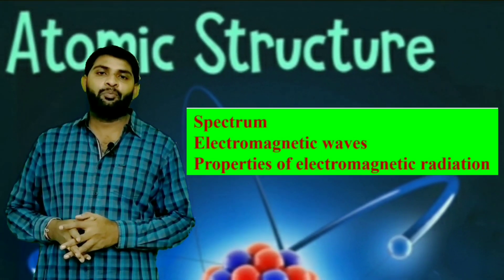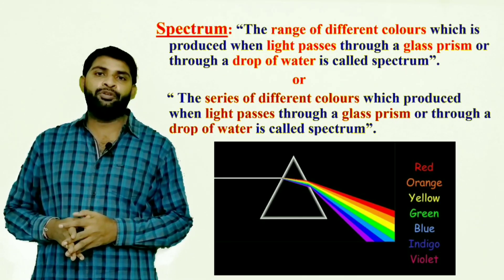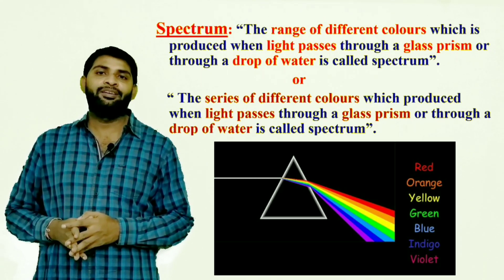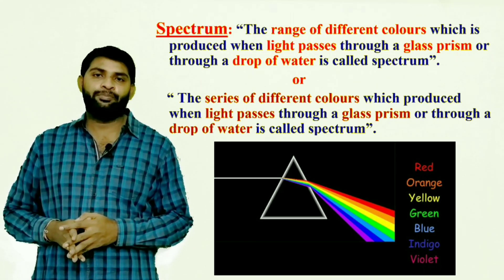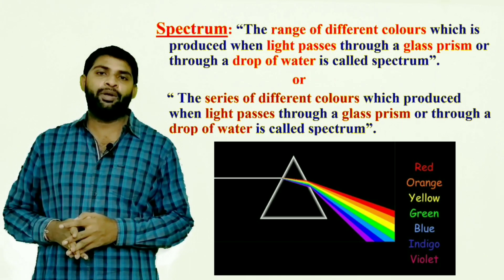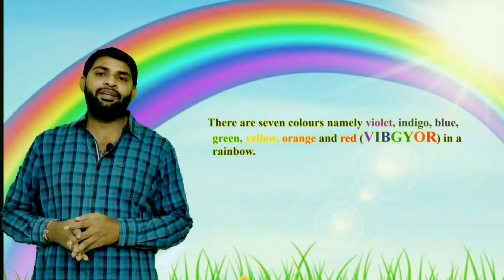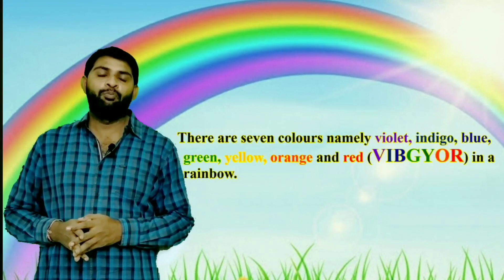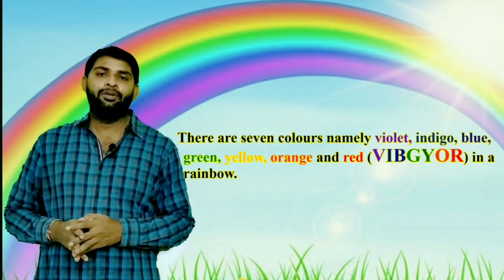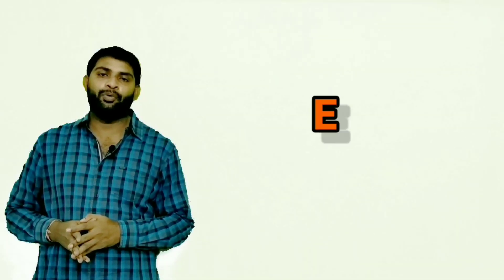Coming to the first topic: spectrum. Spectrum means the range of different colors which is produced when light passes through a glass prism or through a drop of water is called spectrum. An example is a rainbow. There are seven colors — Violet, Indigo, Blue, Green, Yellow, Orange, and Red — known as VIBGYOR. All these colors are present in a rainbow.